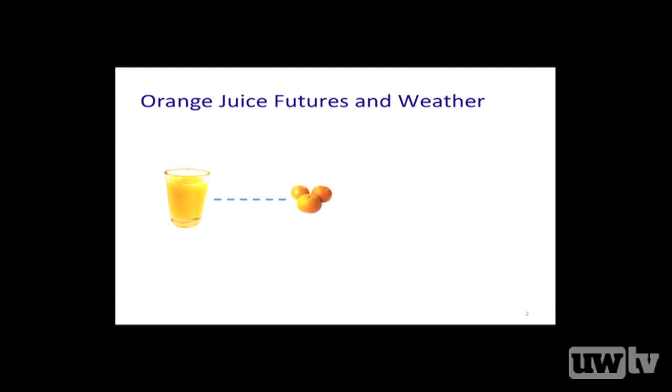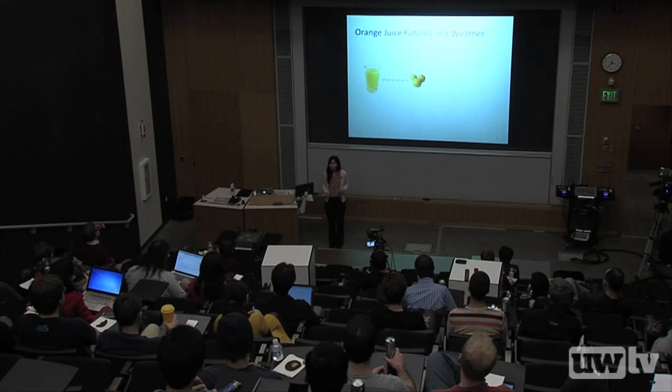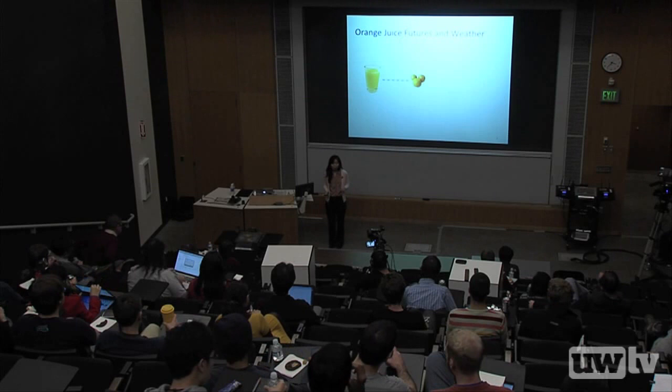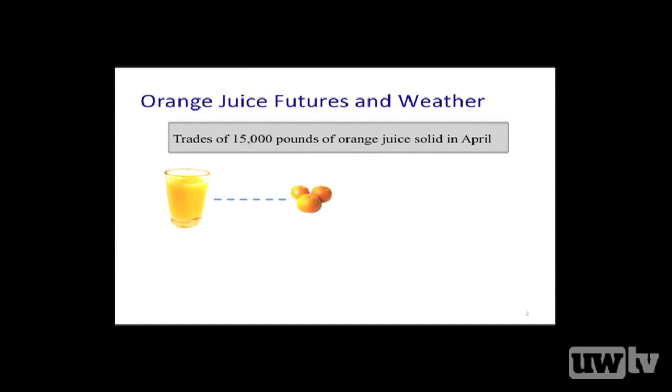Let me start with something seemingly irrelevant — concentrated orange juice. Concentrated orange juice is the number one juice that U.S. consumers drink. Orange trees used to produce concentrated OJ are almost all grown in central Florida, and they are very sensitive to temperatures. Even if the temperature dropped below freezing for just a few hours, those trees could die. It takes five to ten years to grow them, yet they can die in hours.